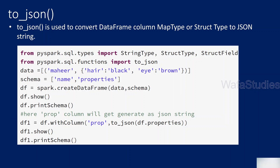The to_json function will help you convert any column that is a map type or structure type into a JSON string. If you remember the from_json function, it does the reverse — it takes a JSON string and converts it back into a map type or structure type. But here, to_json converts map type or structure type into JSON string format. So it is like a reverse operation — converting map types and structure types into JSON string format is what the to_json function does.